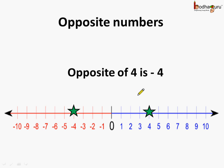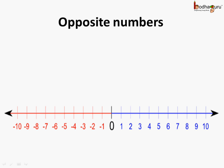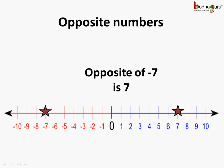So the opposite of 4 is minus 4. Same way, what is the opposite of minus 7? It is 7. So the opposite of minus 7 is 7.